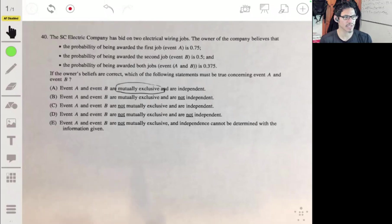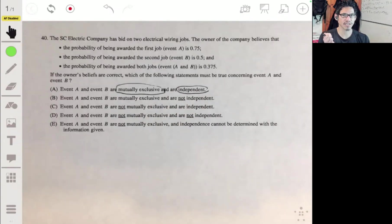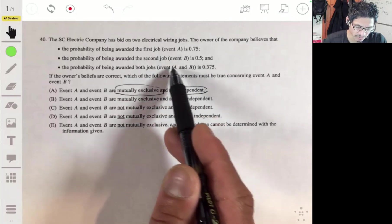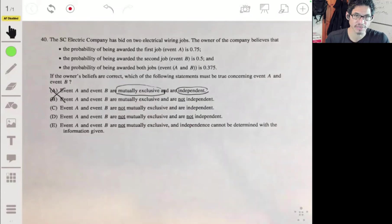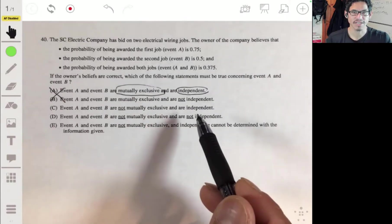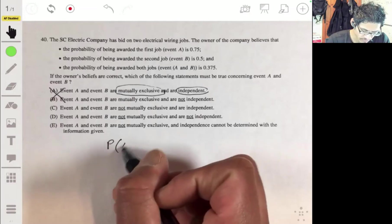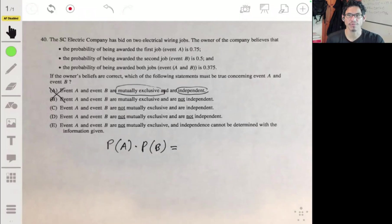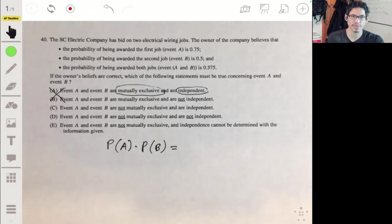Independence is essentially that the probability of one occurring is not going to affect the probability of the other occurring. First off, we know that they can get both jobs. They're not mutually exclusive. It's not going to be A or B, because both A and B can occur. Now, the way you can check independence is with this formula. The probability of two events occurring together, given that their probabilities are not affected by one another, is just the multiplication rule. More specifically, the multiplication rule for independent events.